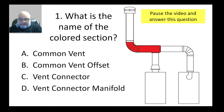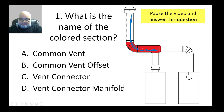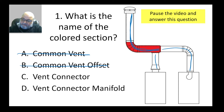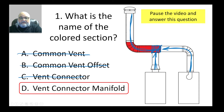The correct answer is not 'common vent' because the red part is just a portion of the common vent — the whole section together is the common vent. It's definitely not a common vent offset because I don't see two elbows, which define a common vent offset. And it's absolutely not a vent connector — those are the vent connectors bringing the vent gas streams and combining them at that junction.